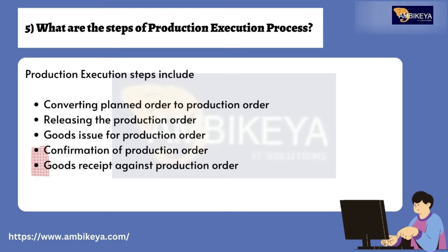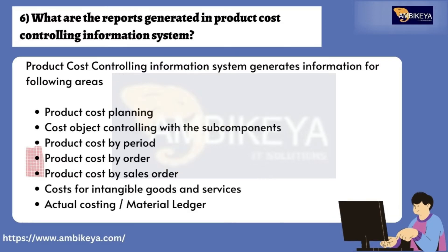Question number five: what are the steps of the production execution process? Production execution steps include: converting planned order to production order, releasing the production order, goods issue for production order, confirmation of production order, and goods receipt against production order. Question number six: what are the reports generated in product cost controlling information system?